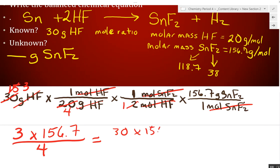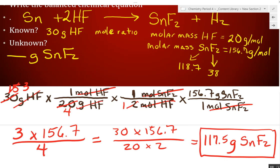How many twos in 30? 15. How many fives in 15 and 20? Three and four. So now, you're going to multiply 3 times 156.7 divided by 4. Remember, you multiply the tops together, divide by the bottoms. Otherwise, if we didn't simplify it, it would just be 30 times 156.7 divided by 20 divided by 2. We just simplified it down. Somebody take 3 times 156.7 divided by 4. 117.5. Grams of SNF2. That is your answer. Starting with 30 grams of hydrogen fluoride gas, we can make 117 grams of tin-2 fluoride.